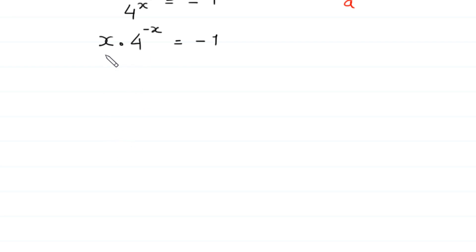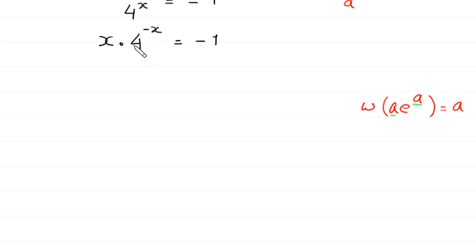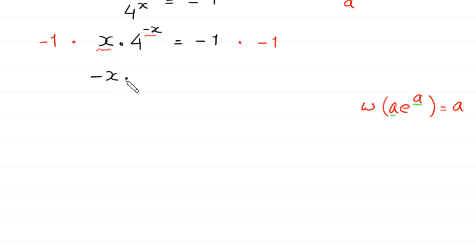Now we want to use the Lambert W function, where W of a times e to the power a is equal to a. To use the W function, we must have the same expression in both places. But currently we have positive x here and positive x in the exponent. To make the x negative, we multiply both sides by negative 1, giving negative x times 4 to the power negative x is equal to positive 1.